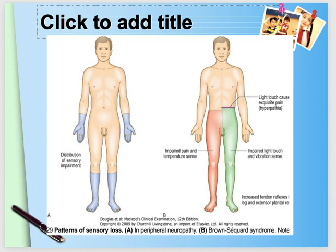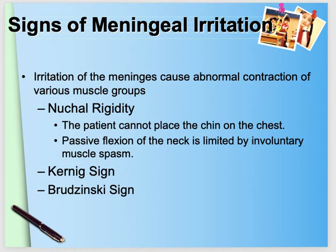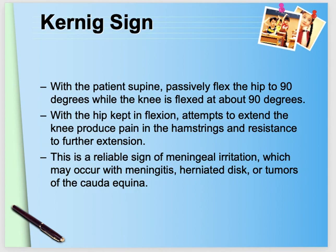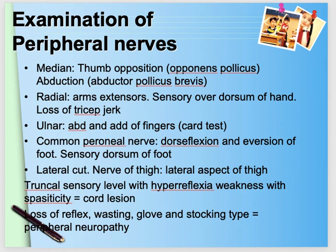The next lecture will begin from the sensory examination point onward, including meningeal signs such as Kernig's and Brudzinski's signs, and examination of peripheral nerves — the median, radial, ulnar, femoral, and sciatic nerves. Examination of peripheral nerves is very important, and each nerve supplies specific areas and movements. See you in the next lecture.